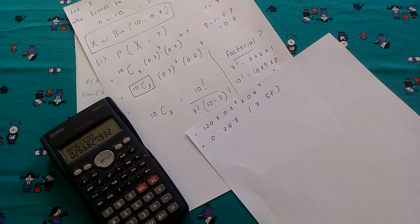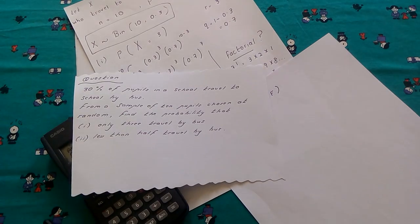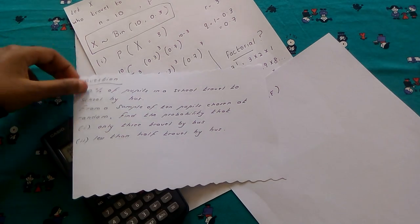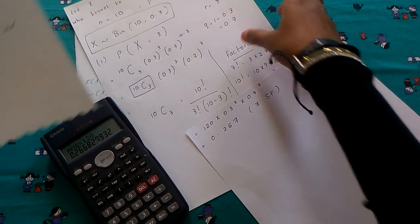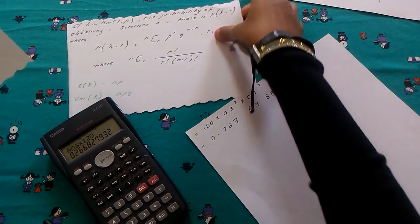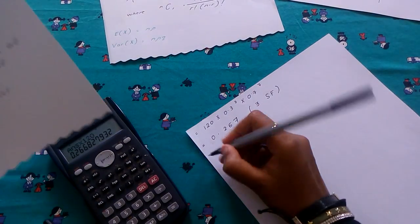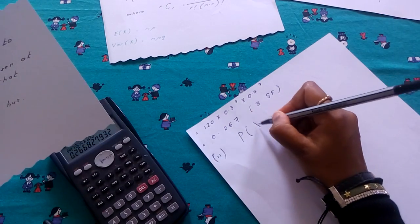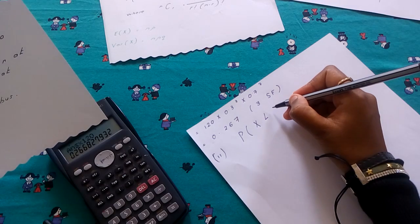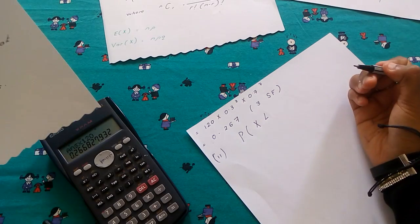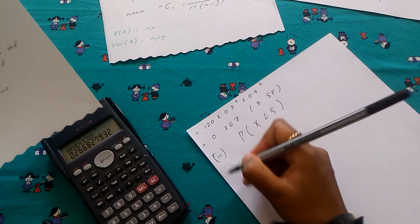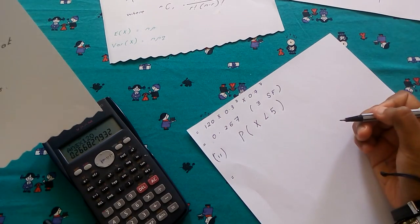For part two, we need less than half of 10 pupils travelling by bus, so P(X < 5). Using a number line, X can take values 0, 1, 2, 3, 4 — we do not include 5 since it's strictly less than 5. So we need to find this probability.